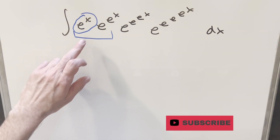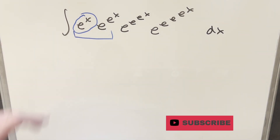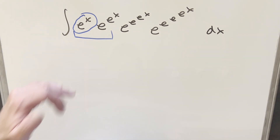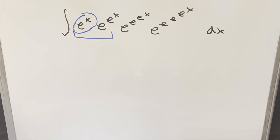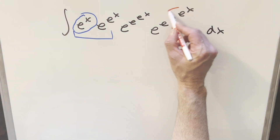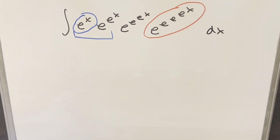My thinking here is if we do the u substitution just for e to the x, it's kind of tedious because then we have to do multiple substitutions. That first substitution is only going to simplify it a little bit, then we're going to need to do another and another. So what I'm proposing instead is let's go all the way to the right side and substitute for this whole thing right here and see what happens.